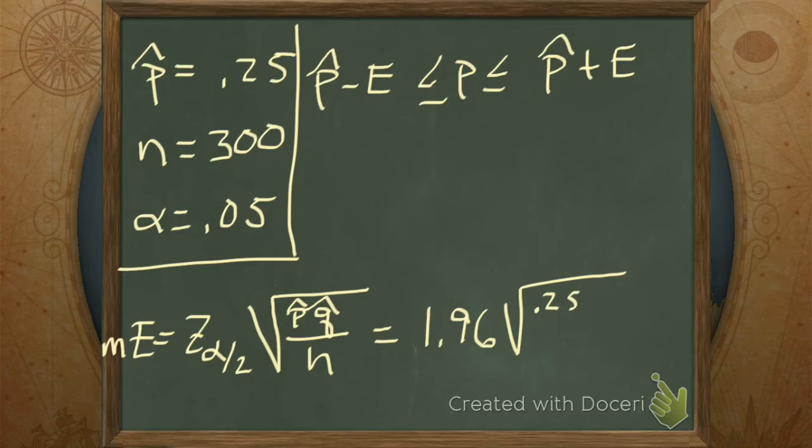How do you find q hat? Yeah, it's the complement. So that's 0.75. Is that right? Divided by n.